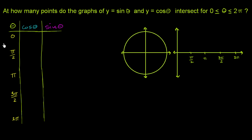Just to be clear, this is a unit circle with the x-axis and y-axis shown. Over here, we're going to graph the two functions, so this is going to be the y-axis and theta on the horizontal axis — not x.